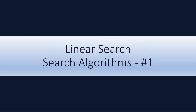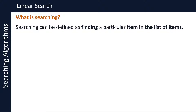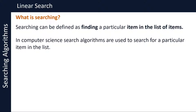In part 1 of this video series about search algorithms, we will take a look at the linear search algorithm. Before we delve into search algorithms, let's define what searching is. Searching can be defined as finding a particular item in a list of items. In computer science, search algorithms are used to search for a particular item in the list. Linear search is one such search algorithm.